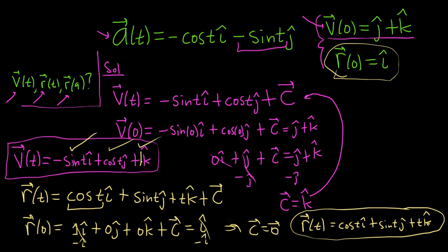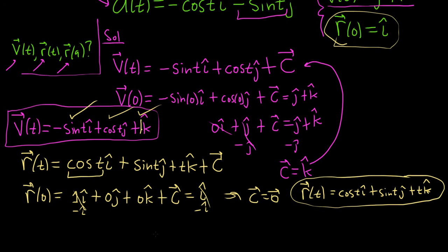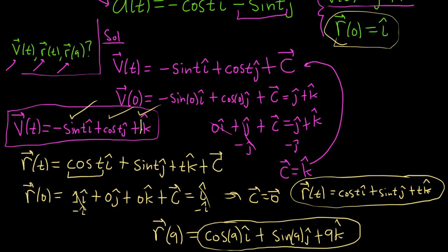So now all we have to do is plug in 9. So let's go ahead and do that. It's kind of a funny number to plug in. We're just going to get a strange answer. So r of 9 basically means you put a 9 where all the t's are. So we'll get cosine of 9 i hat, plus sine of 9 j hat, plus 9 k hat. And that's pretty much it. You can't really do anything else with that. It's 9 radians, not even degrees. It's just a number.